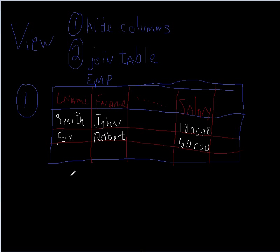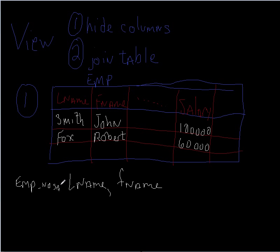One thing we can do is create a view on the employee table, hide the columns we're not interested in, and then grant privileges on that view. We might create a view that includes last name, first name, and all other columns, but omits the salary column. We might call this view something like 'employee_no_sal'. Then we can grant privileges on that view to employees in the HR department, so they can see all employee information but not the salary.